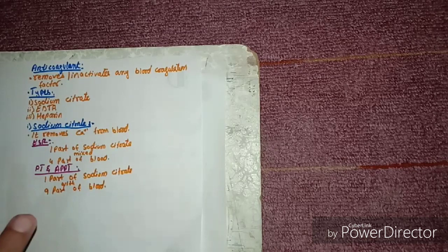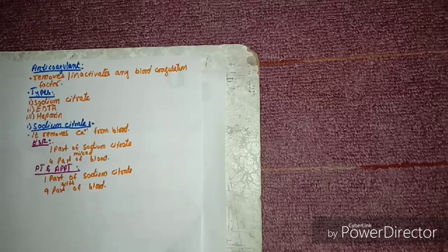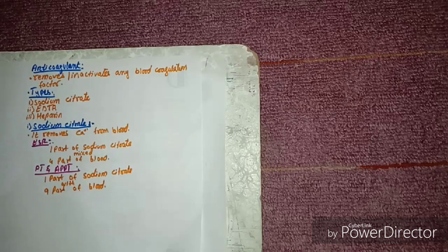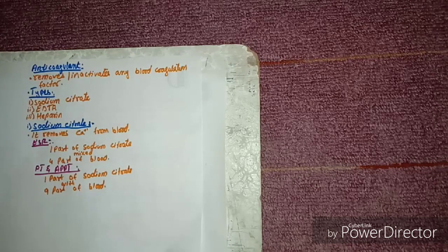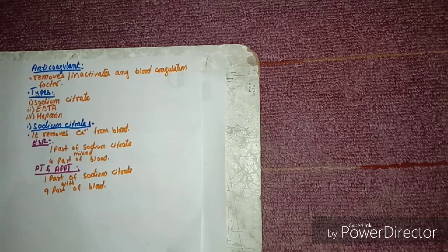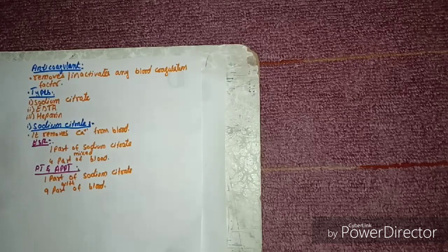Here you can see the difference: for different tests, different ratios of sodium citrate are used. If you do ESR, then one part of sodium citrate is enough for four parts of blood. If we do a clotting test such as PT and APTT, then we take one part of sodium citrate and mix it with nine parts of blood.